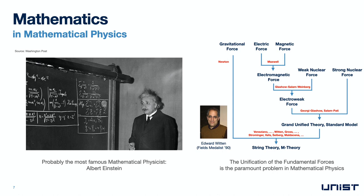Afterwards, Glashow, Salam and Weinberg unified the laws of electromagnetism to the weak nuclear force over 50 years ago to give a unified formalism for electro-weak interaction. A few years later, Georgi, Glashow and Pati found a mathematical formalism for the so-called grand unified theory for electro-weak interaction and strong nuclear force. And since the 1990s, string theory has become the contender for a theory of everything that unifies all forces of nature, including gravity. Eminent string theorists like Edward Witten at Princeton have won the most prestigious prizes in mathematics, including the Fields Medal, which is also known as the Nobel Prize of mathematics.